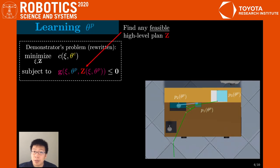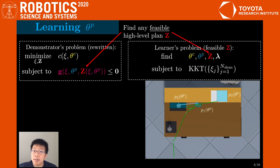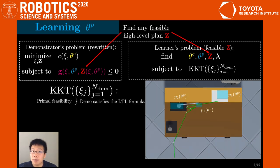Then, the demonstrations will satisfy the KKT conditions for that z, so we can learn theta P and theta C by finding the parameters that make the KKT conditions hold on those demonstrations. KKT includes primal feasibility, which makes the demonstration satisfy the candidate LTL formula. The remaining conditions enforce that the demonstration cannot be locally improved for fixed z.